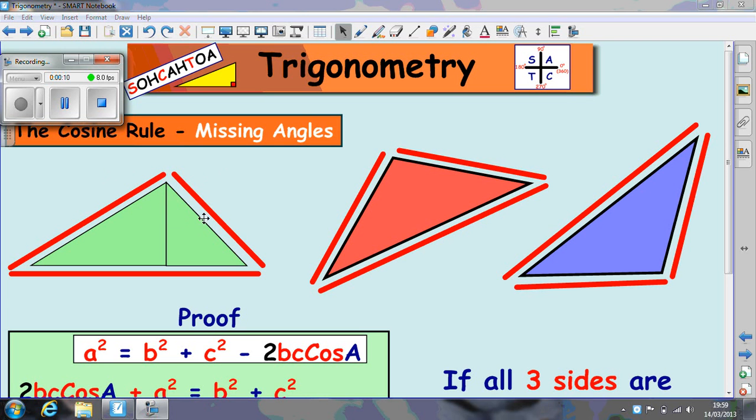Now, in this question, to work out the missing angle, we require all three sides on the triangle. You can see in question 1 here, or example 1, all three sides are needed, same with the red triangle and the blue triangle, the purple triangle.